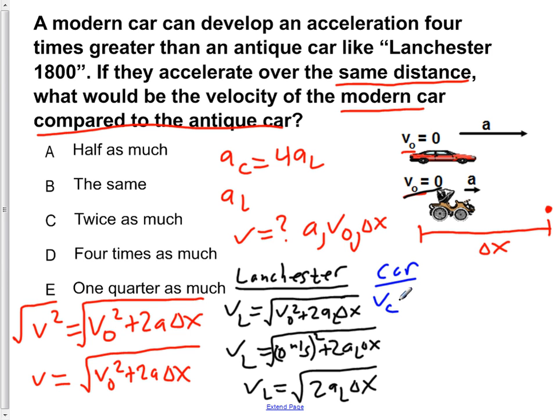For the car, we know vC, denoting the velocity of the car, is equal to the same thing: v naught squared plus 2aC delta x. You remember that aC is 4 times aL. So vC is equal to 0 meters per second squared, because its initial velocity is also 0, plus 2 times 4aL times our delta x. vC is equal to square root 4 times 2aL delta x, which can be rewritten as vC equals square root of 4 square root 2aL delta x.